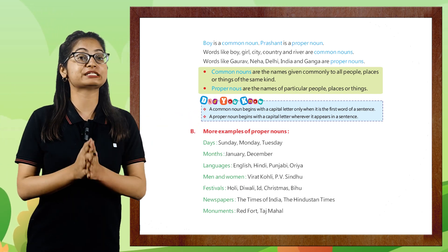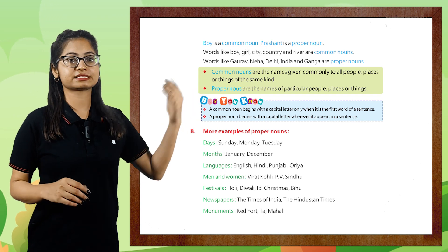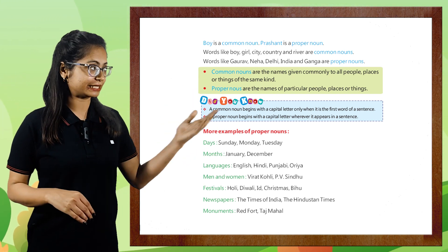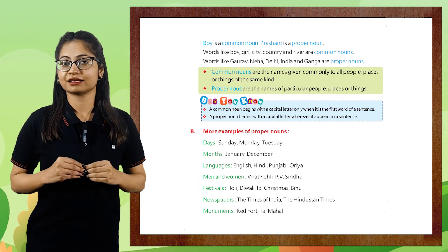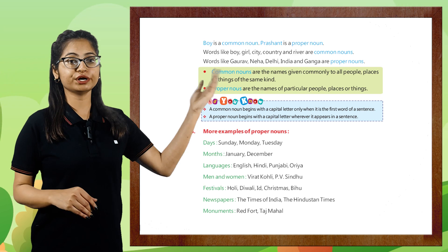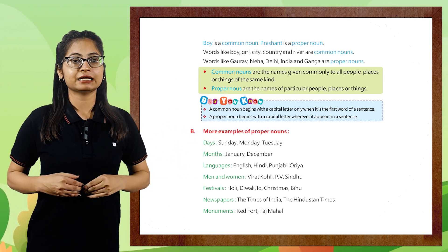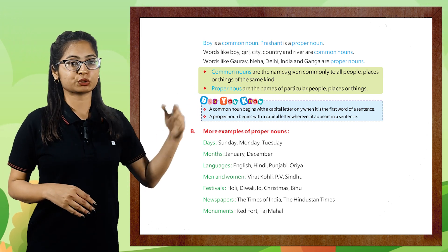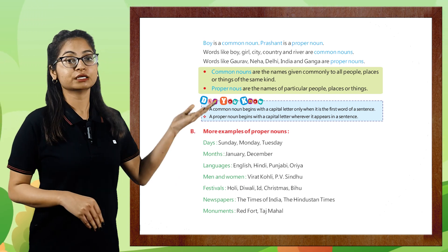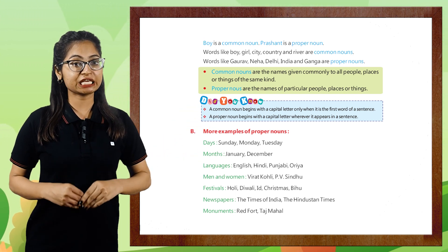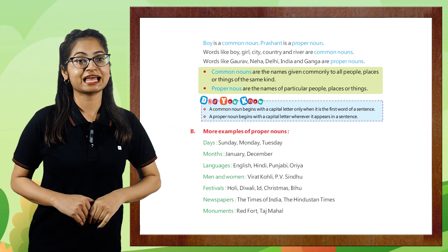Now let's move to more examples of proper nouns. Let's talk about days: Sunday, Monday, Tuesday. Let's talk about months: January and December. Next, languages: English, Hindi, Punjabi, Urdu. Next, people: Virat Kohli, PV Sindhu. Let's talk about festivals: Holi, Diwali, Eid, Christmas, and Bihu. Newspapers: The Times of India, The Hindustan Times.